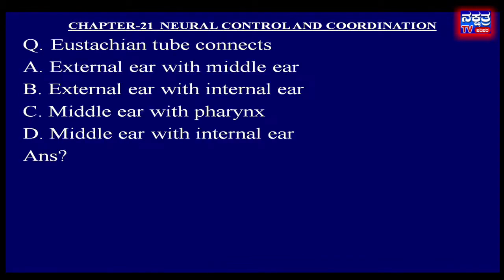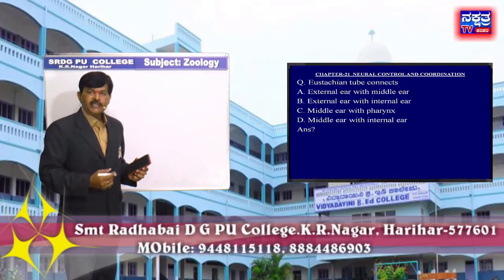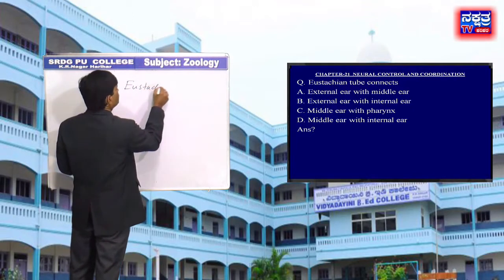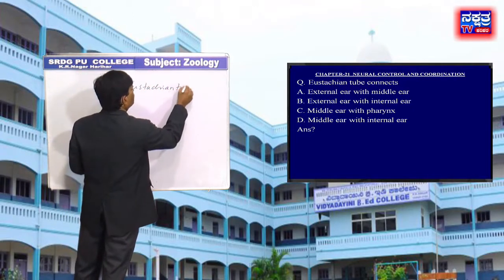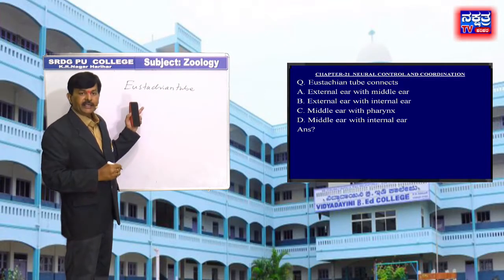Eustachian tube connects: A. External ear with middle ear, B. External ear with inner ear, C. Middle ear with pharynx, D. Middle ear with internal ear. The Eustachian tube is a canal that connects the middle ear to the nasopharynx.